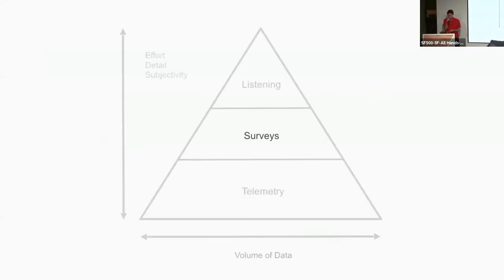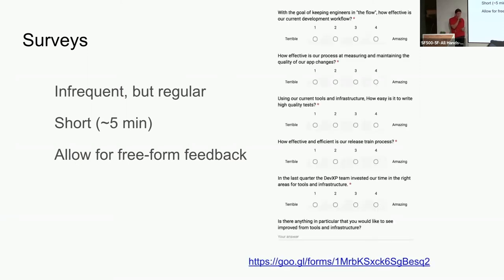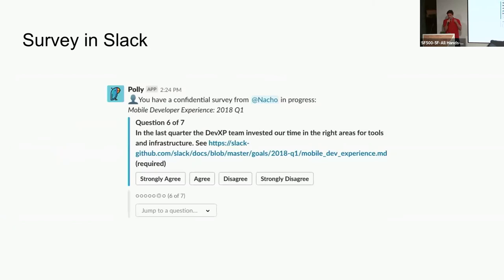So we survey our developers. We try to do surveys infrequently — maybe our developers think it's not that infrequent, but about every quarter. We try to keep them very short and allow for free-form feedback. We started out with a very simple Google Form, and that was okay. Then we switched to a Slack app called Polly. One of the cool things with Polly is that since it was in Slack, our response rate dramatically increased.